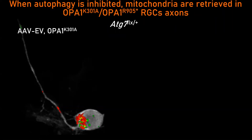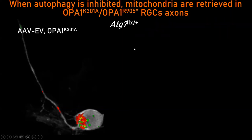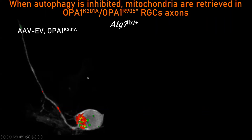We turned to monoallelic deletion of ATG7 because it is known that in retinal ganglion cells, full-blown inhibition of autophagy for long periods — like that observed in mouse knockouts for essential autophagy genes — is detrimental. If you take one allele of ATG7 out from retinal ganglion cells, autophagic flux — the measurement of how efficient autophagy is — is reduced. So what happens to mitochondrial distribution when we inhibit autophagy?